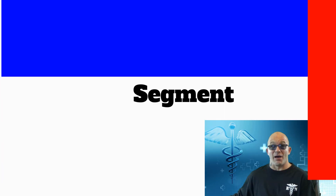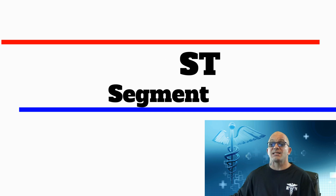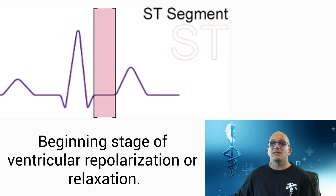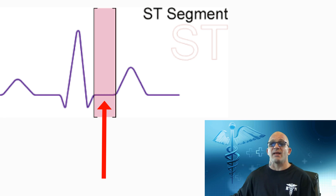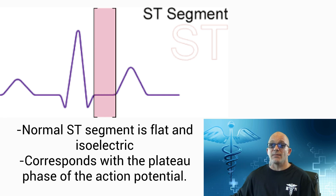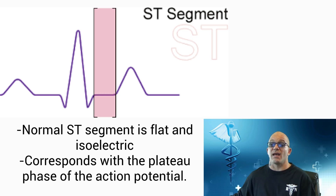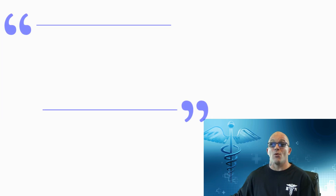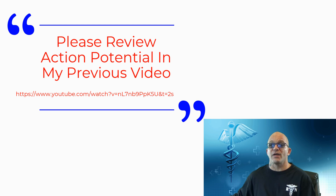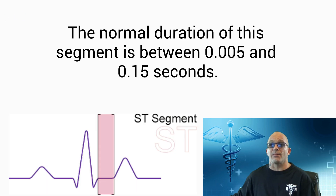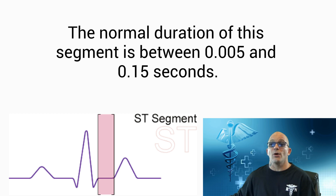The last and final assessment is of the ST segment. The ST segment indicates the beginning stage of ventricular repolarization or relaxation. It is the line at the end of the QRS complex that follows to the beginning of the T wave. The normal ST segment is flat and isoelectric and corresponds with the plateau phase of the action potential. To understand more about action potential, please review my previous video on the electrical conductivity of the heart. The normal duration of this segment is between 0.005 and 0.15 seconds.